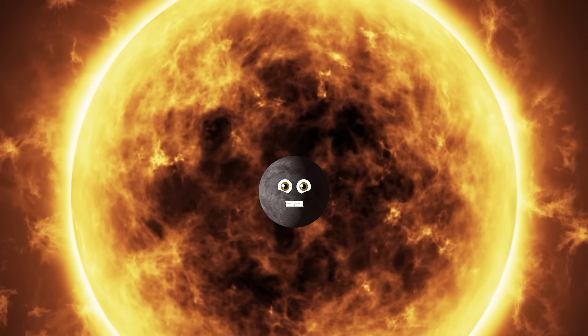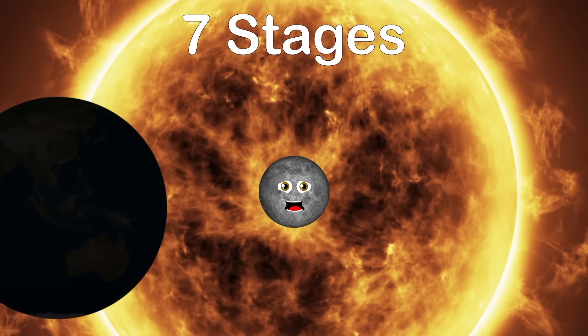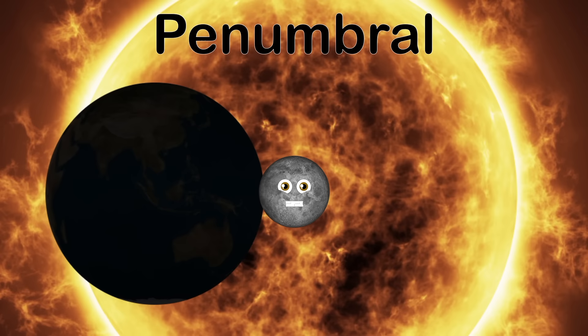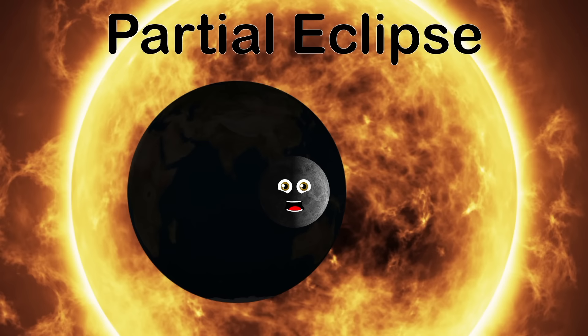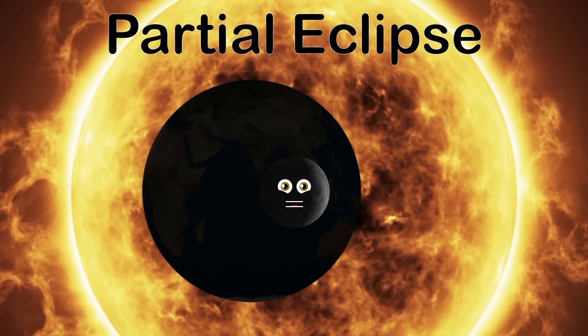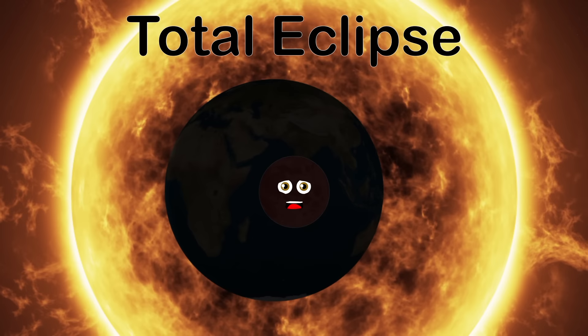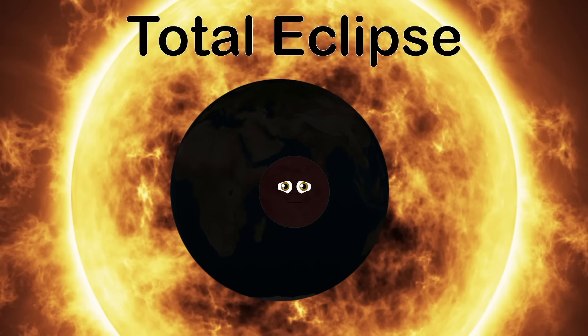There are seven stages to this event. Stage one is the penumbra — it's when the moon enters the penumbra and a partial shadow is cast on its surface. Stage two is a partial eclipse, when the earth moves between the sun and the moon, casting more of a shadow. Stage three is the total eclipse — it's when the earth blocks the rays of the sun completely.